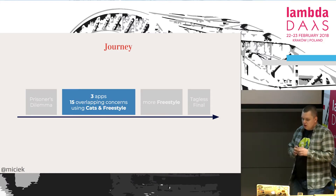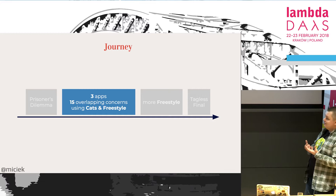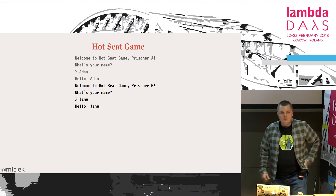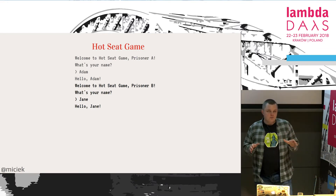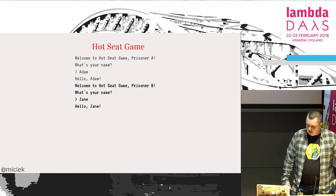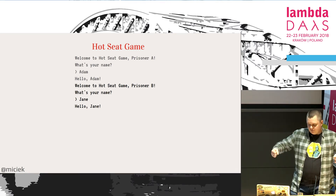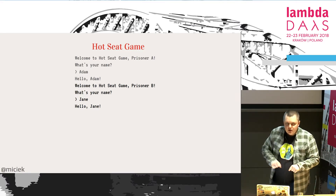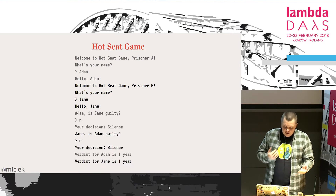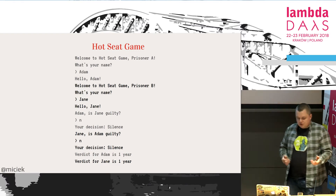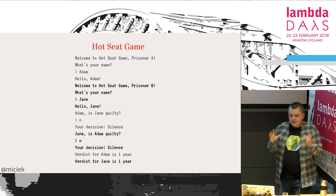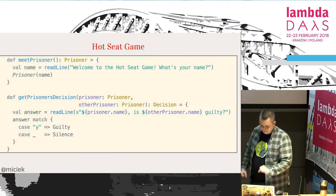Let's try to create a whole infrastructure for multiple games of Prisoner's Dilemma. The first one will be a hot seat game — we are sitting at our computer, bored, wanting to play a game with a friend on one computer. We'd need some kind of blanket to not show what we are typing. In the console it would look like: 'Hello Adam,' then 'Hello Jane,' and we ask both of them about their decision. This is the whole game we want to implement in this section.